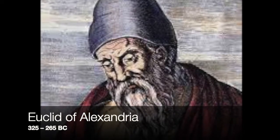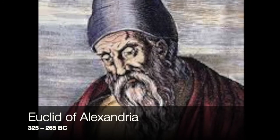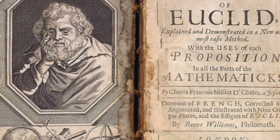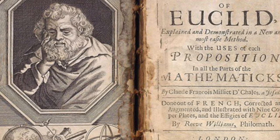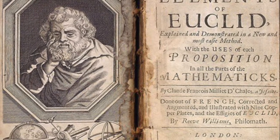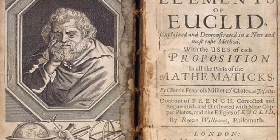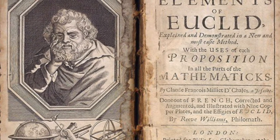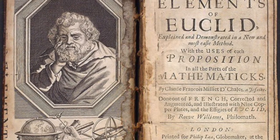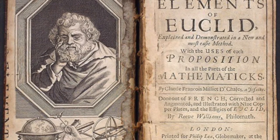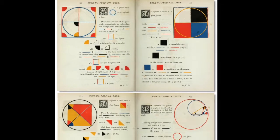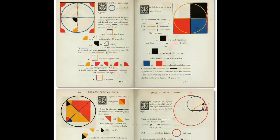Euclid of Alexandria is considered to be the father of modern geometry. He is best known for the thirteen-book treatise, The Elements, which contains just a few basic facts, twenty-three definitions, five postulates, and five common notions or general axioms. Euclid's Elements forms the basis of modern geometry taught in schools today.